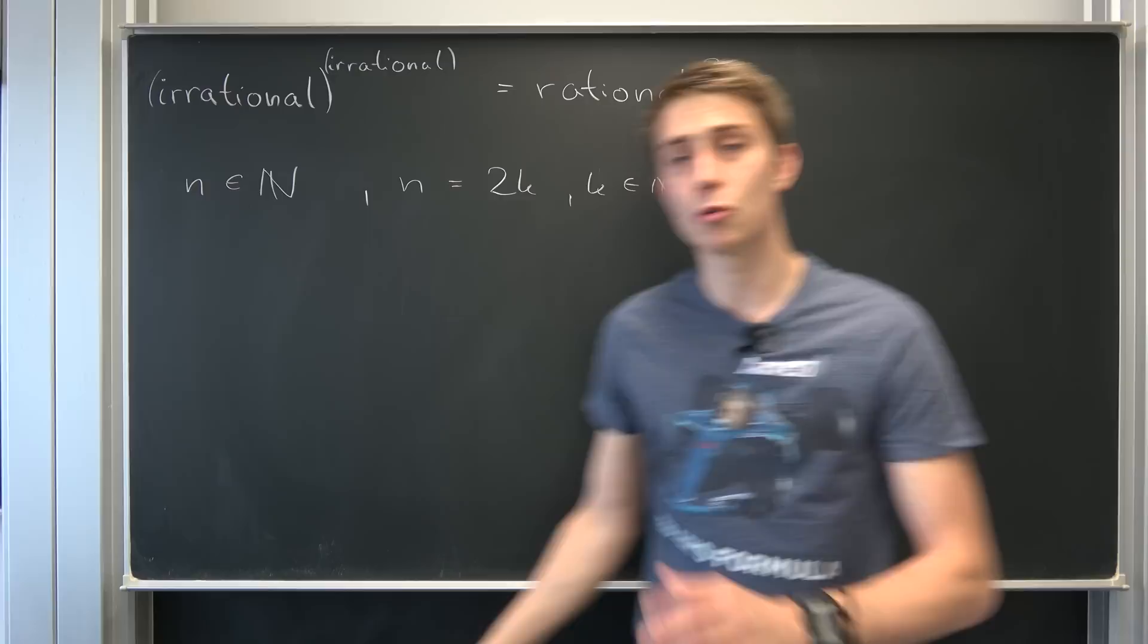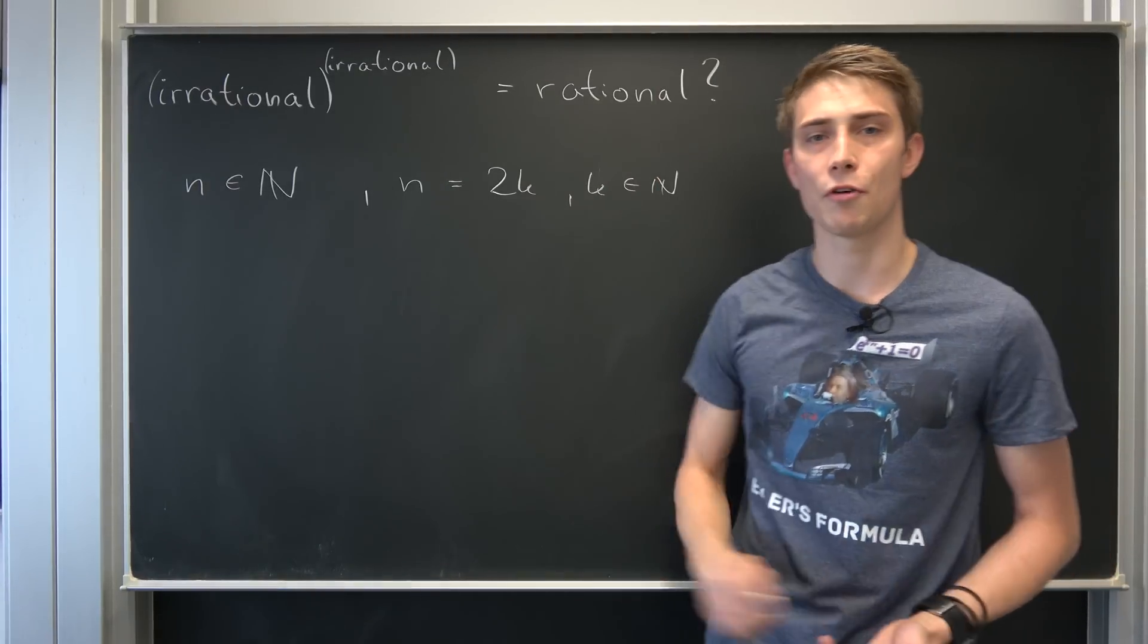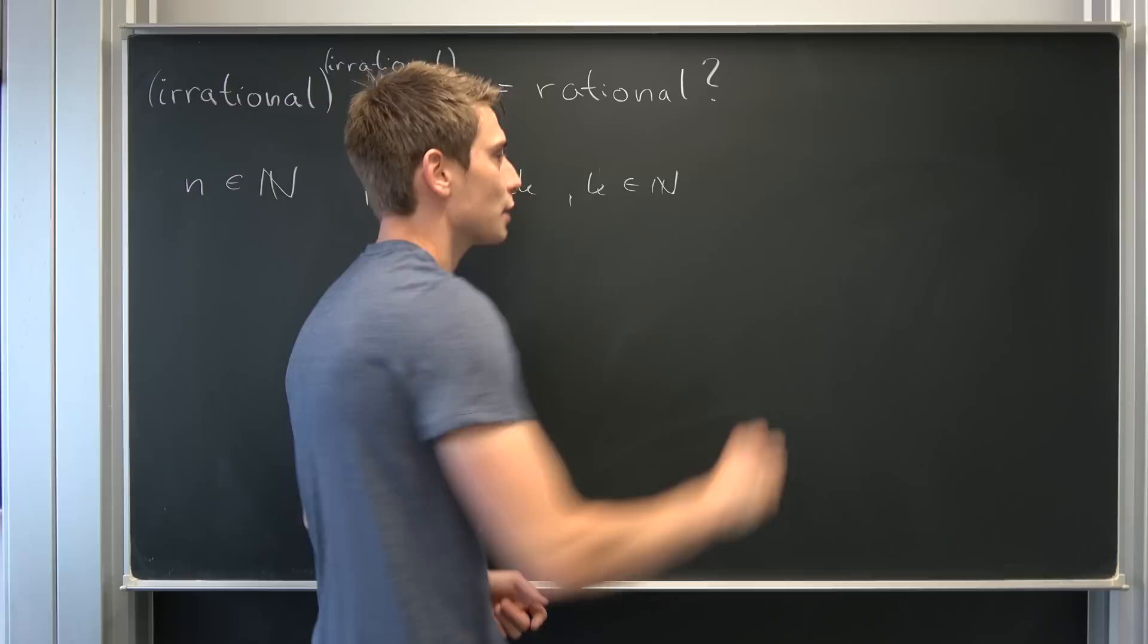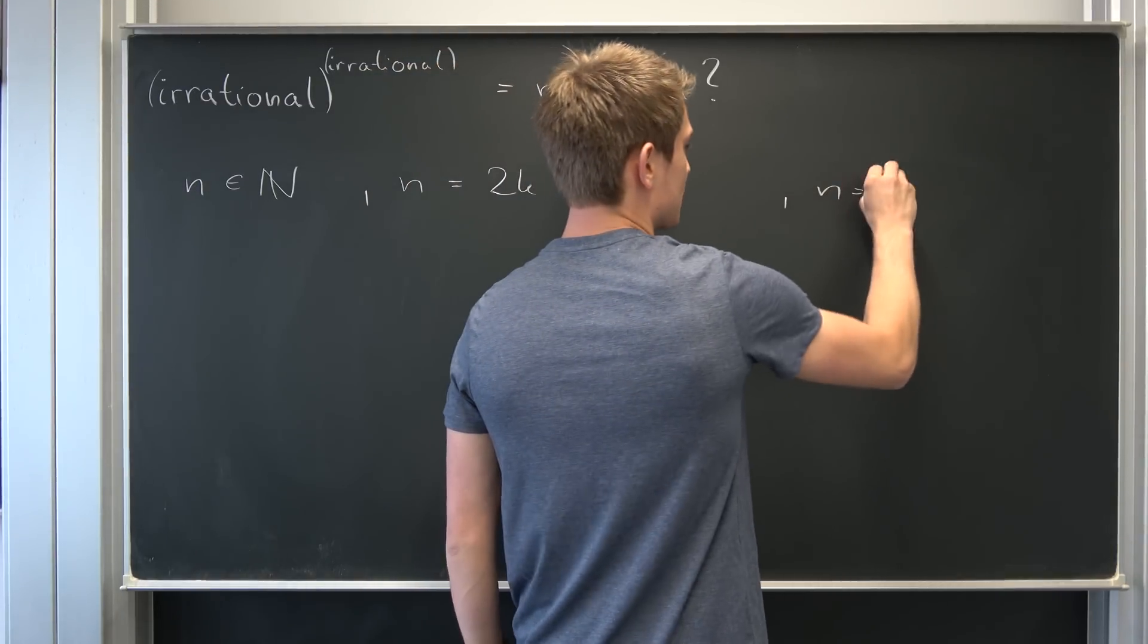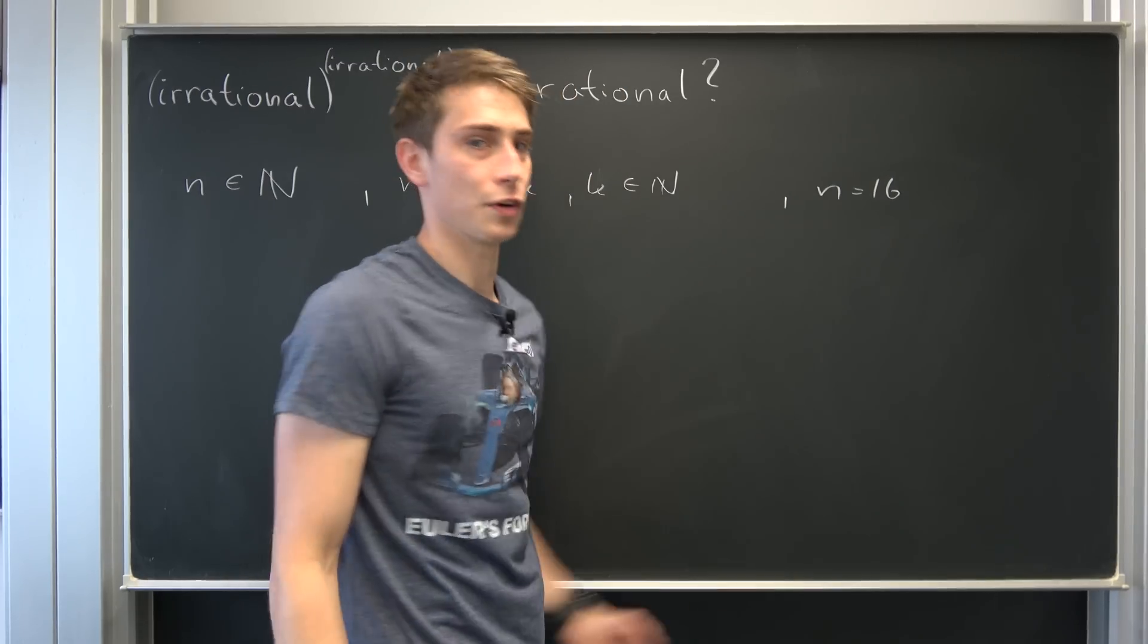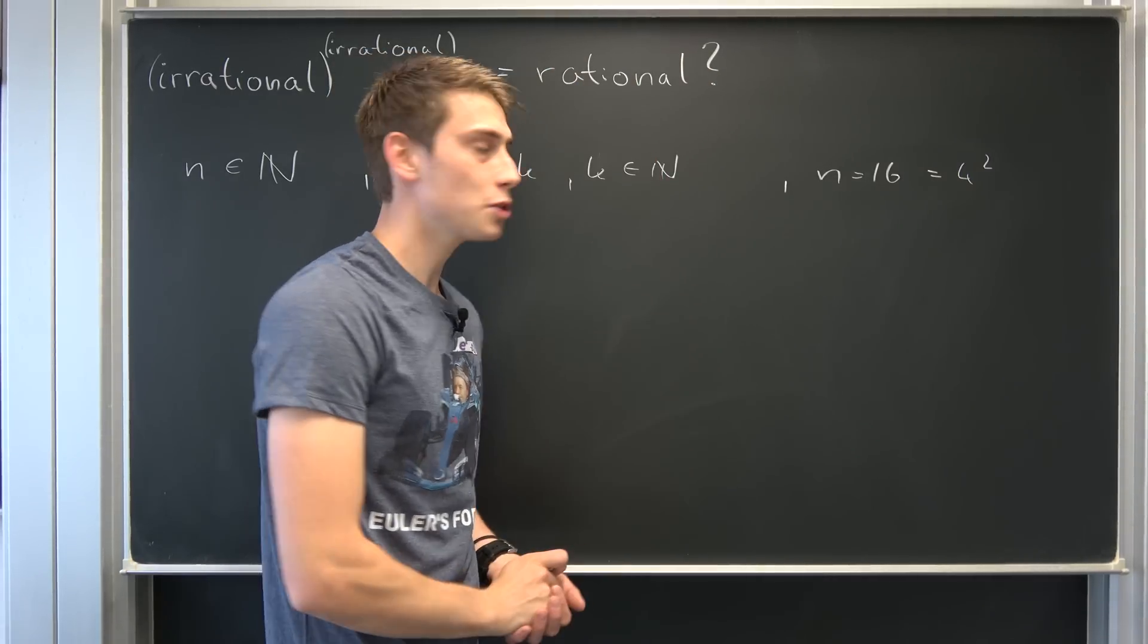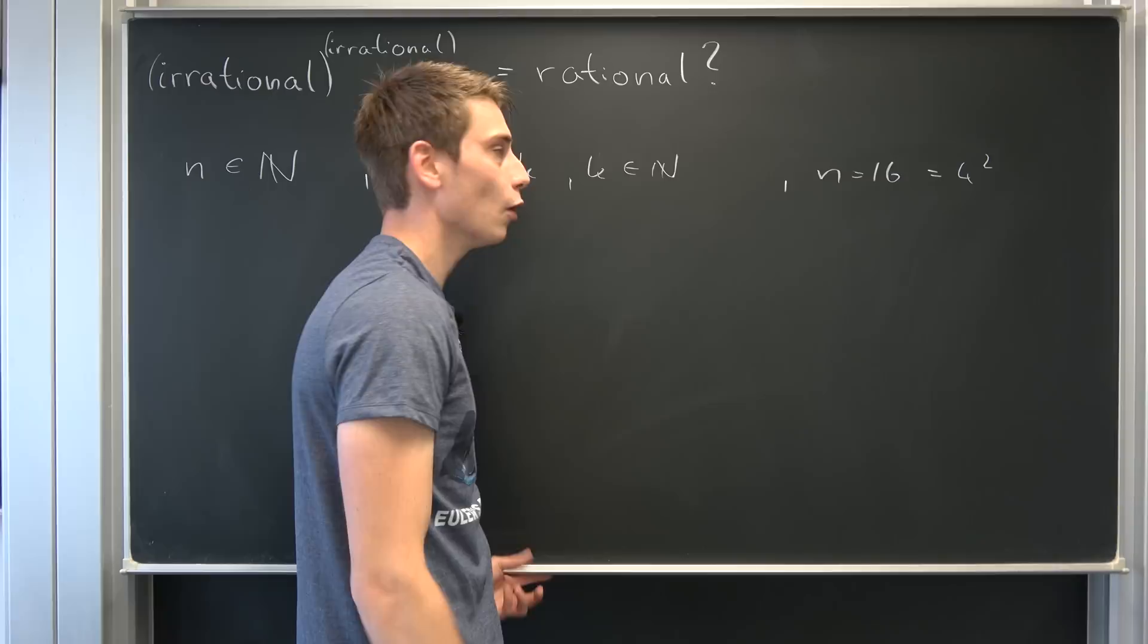But also we don't want n to be a perfect square. What does that mean? Well, it would spoil all the fun for us. Because for example if n is 16, which is indeed a perfect square, it's nothing but 4 squared.